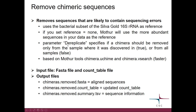One of the parameters specifies if a chimera should be removed only from the sample where it was discovered or from all the samples. This tool in Chipster is based on the Mothur tools chimera.uchime and chimera.vsearch. The vsearch option is faster, so we recommend that you use that.